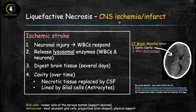Disease number two that causes liquefactive necrosis is CNS ischemia or infarct. The CNS includes both the spinal cord and the brain, but almost always when talking about this ischemia we're talking about ischemic stroke. Ischemia means decreased blood flow; infarct refers to the dead tissue resulting from it. This is a very important exception: essentially all other causes of ischemia in the body lead to coagulative necrosis, but the brain is unique — its ischemia causes liquefactive necrosis.